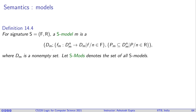A model m has one part that sets the domain — the space where values come from. For a function f, its interpretation under m is some function which takes n parameters and returns one value in that space. Similarly, for a predicate p of arity n, its interpretation is a set of n-tuples. S-mod denotes the set of all models for signature S.